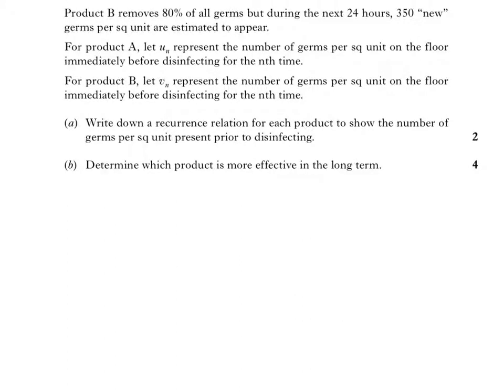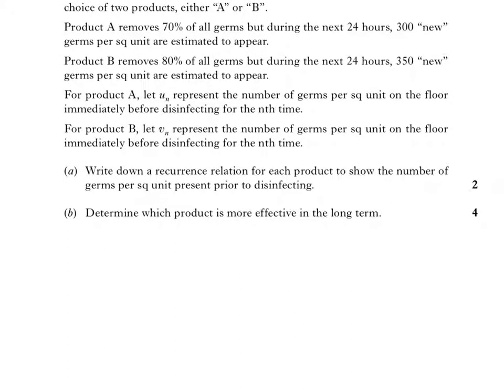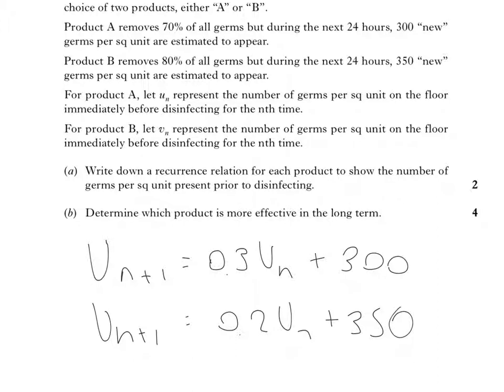So, for the first one, product A, U_{n+1} equals, so it loses 70%, or removes 70%, so it retains 30%, and we would add on, since it's 300 new are estimated to appear, 300 is product A. Product B removes 80%, which means 20% are still there, and 350 appears, so that's my two recurrence relations.